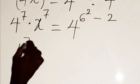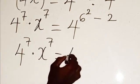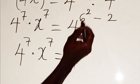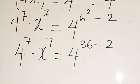Minus 2, we have 4 to the power of 7 multiplied by x to the power of 7, then equals this will be 4, 6 to the power of 2 will give us 36, then minus 2. Are you following?